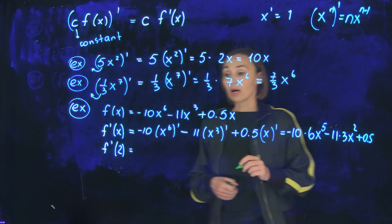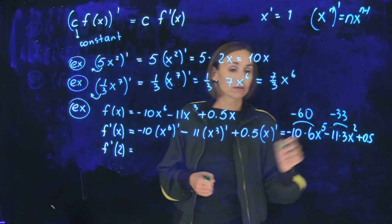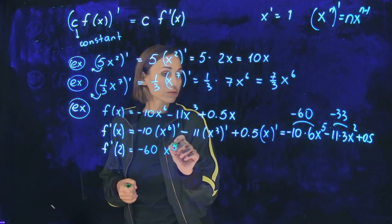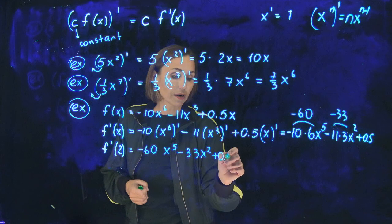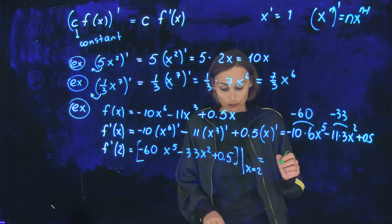Now, I need to evaluate the derivative at 2. This coefficient will be negative 60. This coefficient will be negative 33. So this is negative 60 x to the power 5 minus 33 x squared plus 0.5. If you take it for the argument x equals 2, evaluate at x equals 2. So the result will be, if you finish computation,